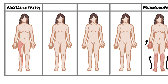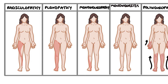A plexopathy affects the whole plexus, such as the lumbosacral plexus, so multiple nerve roots are affected, as shown in this diagram. A mononeuropathy affects only one peripheral nerve, such as the common fibular nerve causing foot drop. Mononeuritis multiplex involves inflammation of multiple peripheral nerves in an asymmetric manner, such as the common peroneal nerve and the left median nerve.